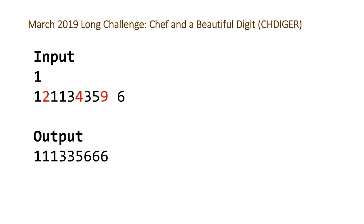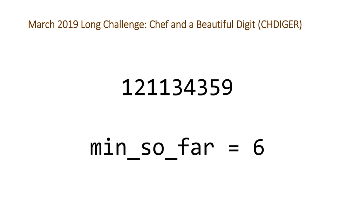Starting with our number, we set our minimum so far to be the minimum of our favorite digit (6 in this example) and the last digit. So if the last digit were 5 instead of 9, we'd start with 5. We then look at the last digit — if it's greater than our minimum so far, we erase it. In this case the 9 is greater, so we erase it.